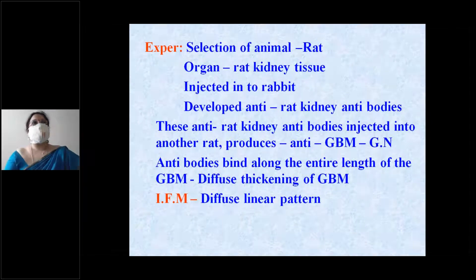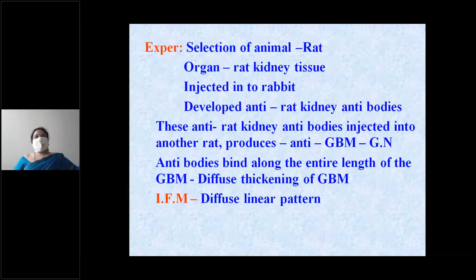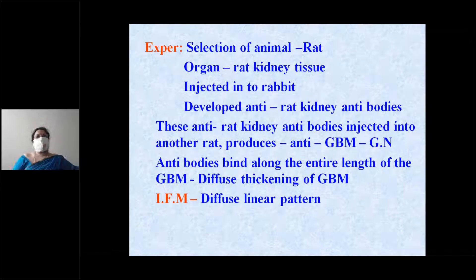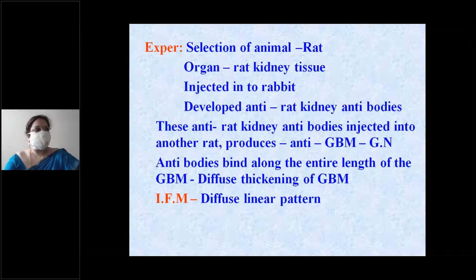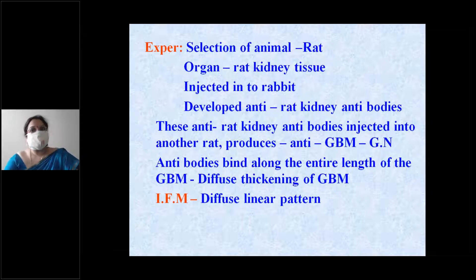A classic experiment was performed to study glomerular injury. They selected an animal — a rat — and took rat kidney tissue. They then injected this rat kidney tissue into a rabbit.